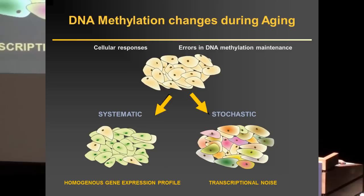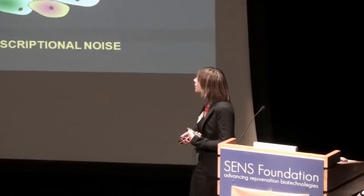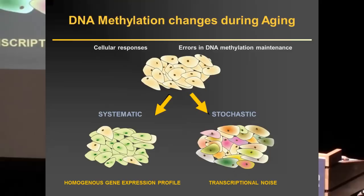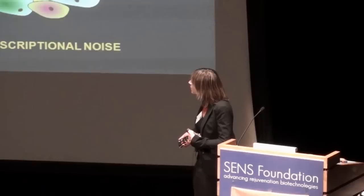Cells can undergo two types of changes and it's very important to make a distinction between the systematic and the stochastic ones. We talk about systematic changes when all the cells undergo the same change, generating a very homogeneous gene expression profile. Those changes may be a response to adaptation mechanisms and may actually be good changes. The problem is more with the stochastic ones, which occur when cells undergo different changes. Cells start to accumulate what we call epigenetic mutations and will behave in different ways. If each cell starts to do something different, then the organ functionality will be impaired.